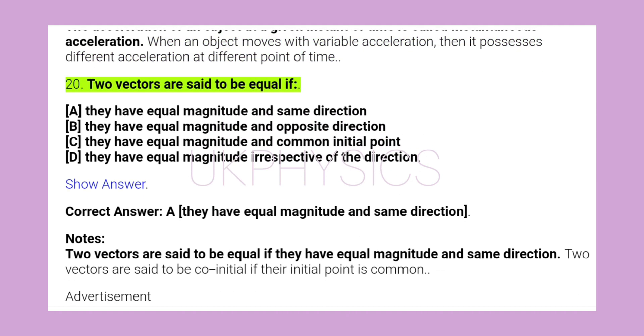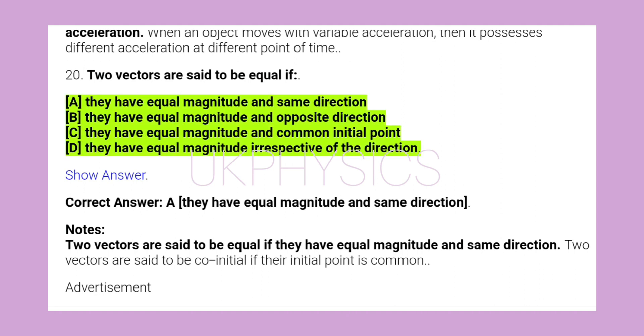20. Two vectors are said to be equal if A. They have equal magnitude and same direction, B. They have equal magnitude and opposite direction, C. They have equal magnitude and common initial point, D. They have equal magnitude irrespective of the direction. Correct answer A. They have equal magnitude and same direction.